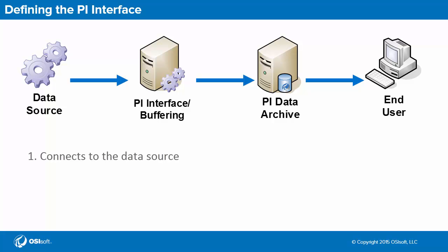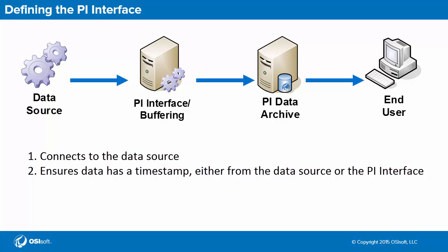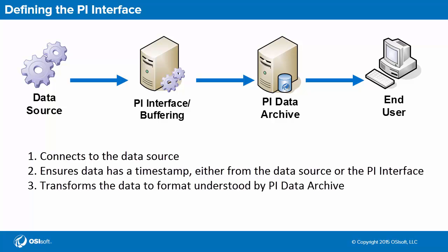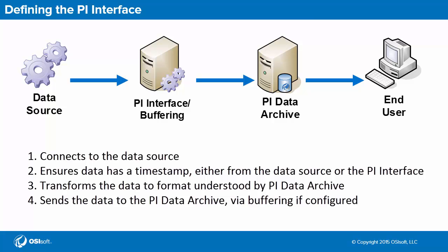It establishes a connection to its data source, whether it's an OPC server, relational database, or even a PI data archive. When the PI interface receives a new value, it timestamps the data or ensures that a timestamp comes along with the value from the data source. Next, the PI interface performs the translation from the OPC protocol, for example, to the language of the PI system, so that other PI system components like buffering and the PI data archive can correctly interpret the data. Lastly, data exits the PI interface and continues its trek through the PI system data flow.